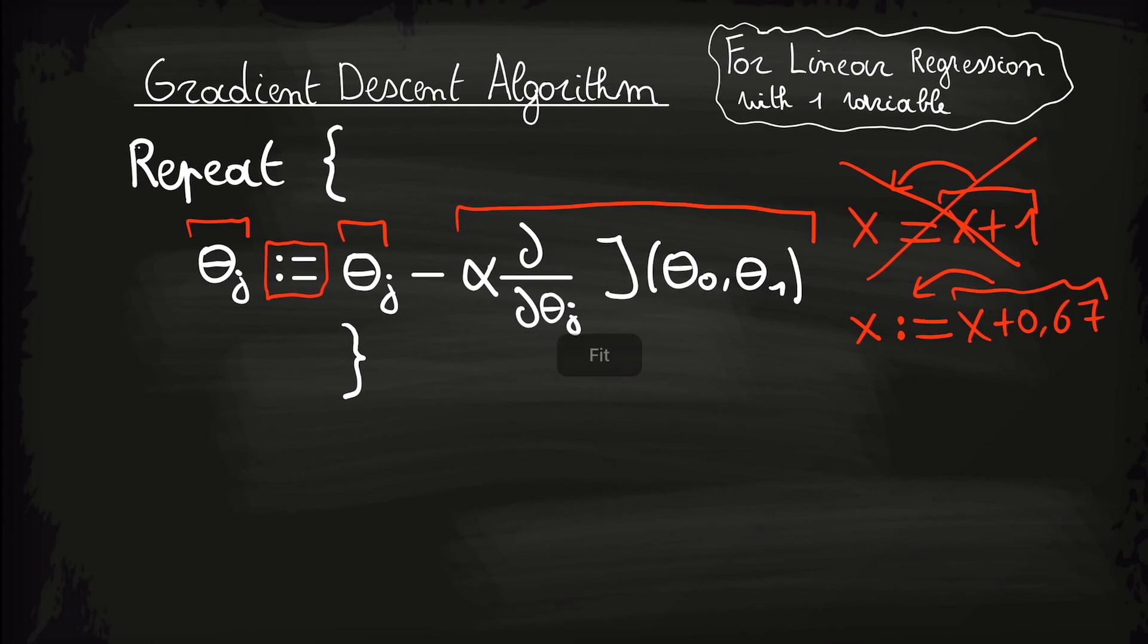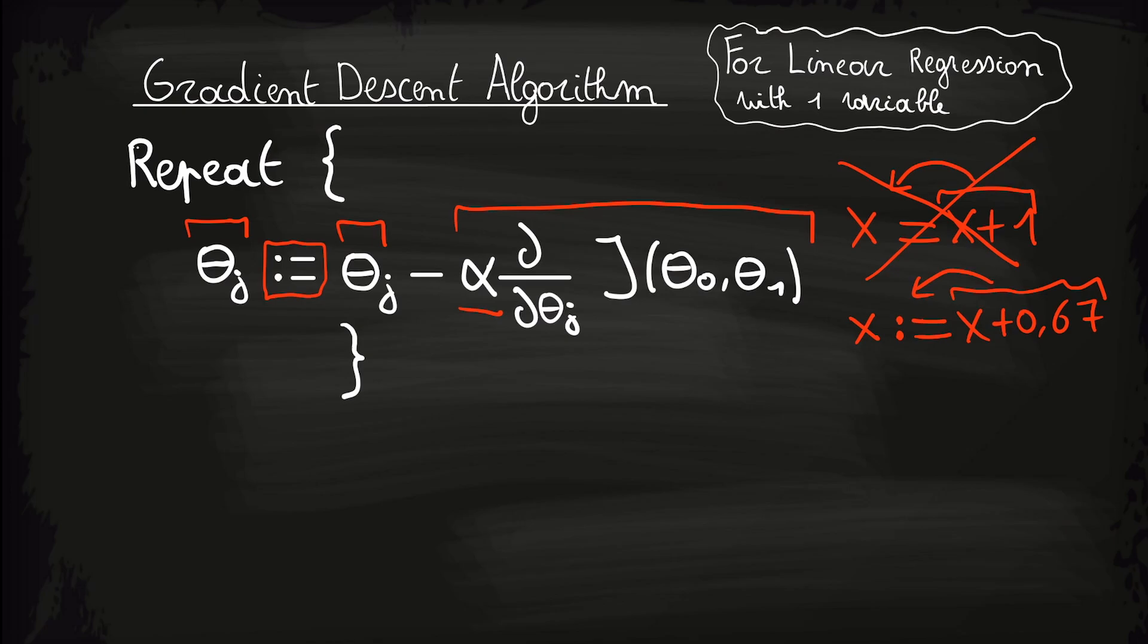Now, let us look at what this term means. We'll start with alpha. Alpha is called the learning rate and it basically tells us how large of a step the algorithm takes.